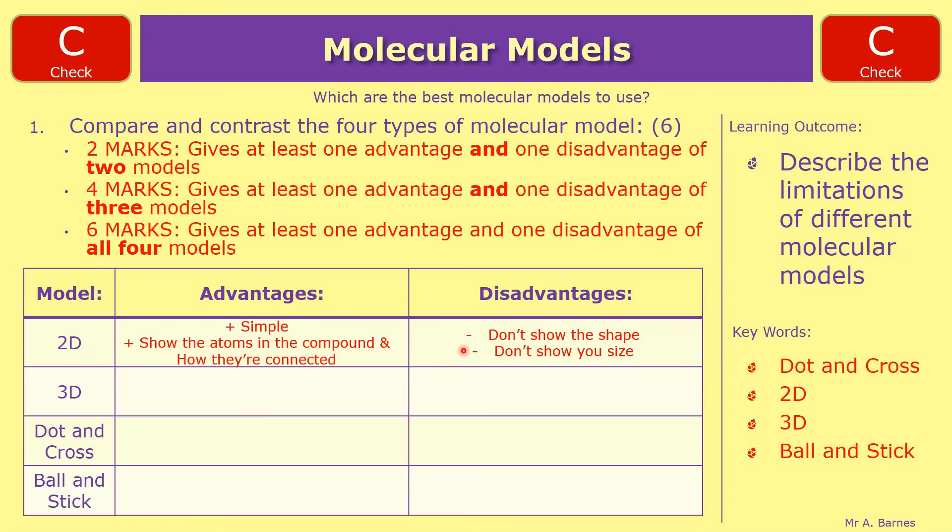3D shows the ion arrangement—that's your positive—but your negative is it only shows the outside.